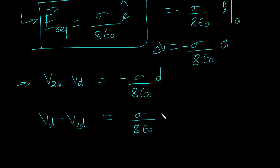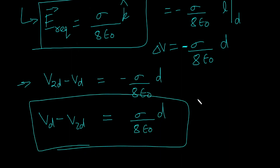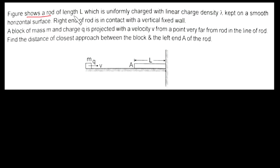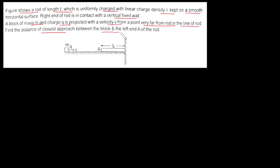The figure shows a rod of length L which is uniformly charged with linear charge density lambda, kept on a smooth horizontal surface. The right end of the rod is in contact with a vertical wall. A block of mass M and charge Q is projected with velocity V from a point very far from the rod along the line of the rod. Find the distance of closest approach between the block and the left end A of the rod. For this, we will definitely use conservation of energy.